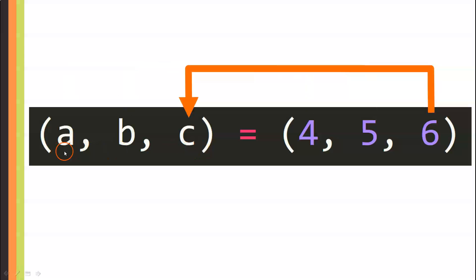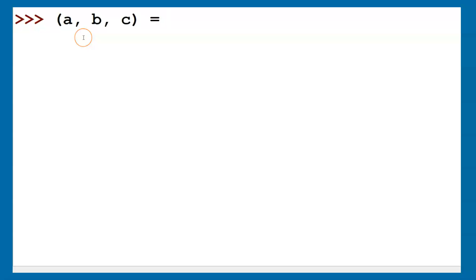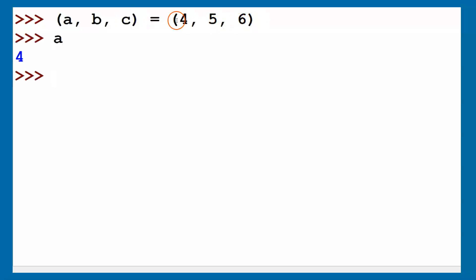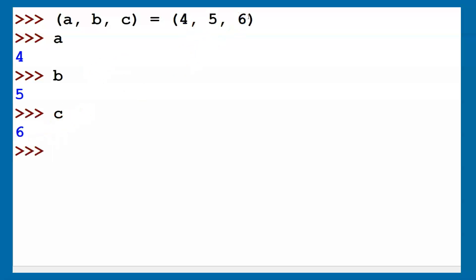That is basically how tuple assignment works — each value is assigned to its corresponding variable individually, so in the program you can use these variables and they will have their corresponding values. Let's see this with a practical example. In the interactive shell, writing the tuple assignment a, b, c = 4, 5, 6 assigns 4 to a, 5 to b, and 6 to c. After pressing enter, checking a gives 4, b gives 5, and c gives 6, exactly as expected.